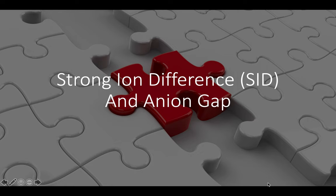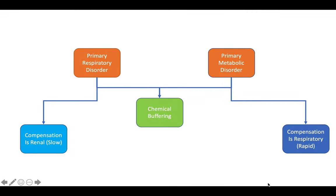Today we're going to discuss strong ion difference, which I have already discussed before, and the anion gap. It will be very easy if we describe acid-base disturbances in a simple way. For a primary respiratory disorder, there is chemical buffering, and for a primary metabolic disorder, there is also chemical buffering.